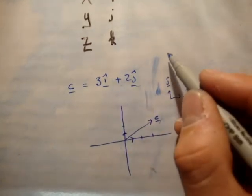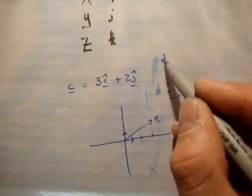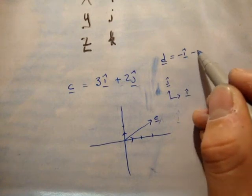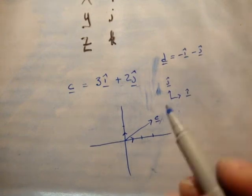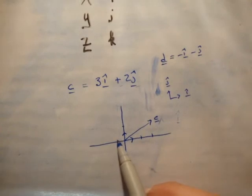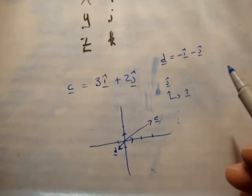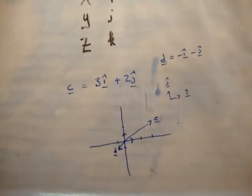Similarly, a vector D equal to minus i-hat, minus j-hat would be minus 1 in the i-hat here, minus 1 in the j-hat here. This might be the vector D. So, that's why they're called unit vectors.